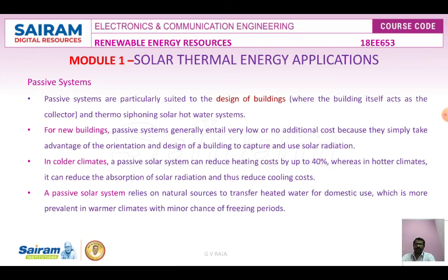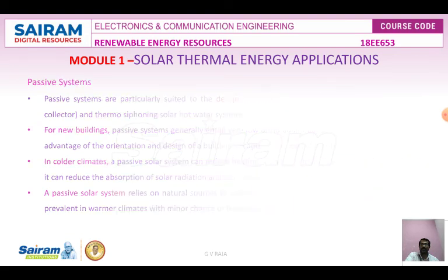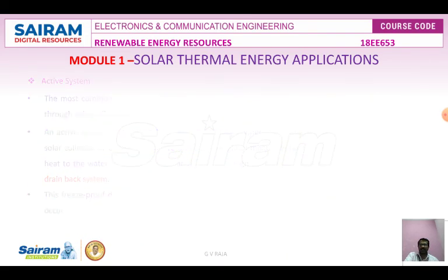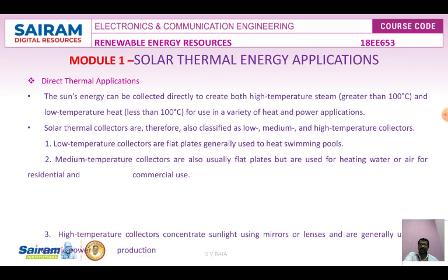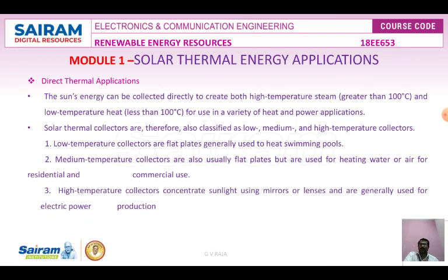Passive systems are used for building applications as discussed. Active systems include drain-back systems and direct thermal solar energy systems. In direct solar thermal systems, the Sun's energy is collected directly to create high-temperature steam and low-temperature heat for a variety of heat and power applications. Collectors are classified as low, medium, or high temperature. Low-temperature collectors (flat plate collectors) are used for heating swimming pools; medium-temperature collectors for heating water; high-temperature collectors for generating electricity.